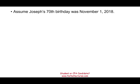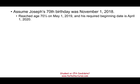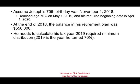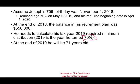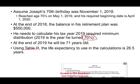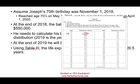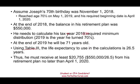Assume Joseph's 70th birthday was November 1, 2018. He reaches age 70½ on May 1, 2019 — six months later — and is required to start distributions by April 1, 2020. At the end of 2018, his balance was $550,000. We calculate his 2019 required distribution. At the end of 2019, he will be 71 years old. Using Table 3, the factor for age 71 is 26.5. We take $550,000 divided by 26.5, giving a minimum required distribution of $20,755.